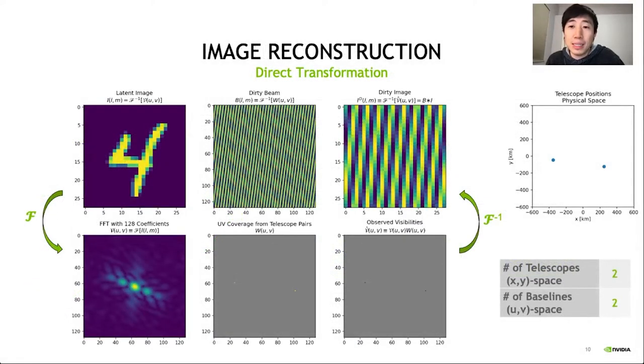As an example, say we're observing this MNIST 4 digit with an array of two telescopes. The panels in the top row are the image plane, while the bottom row shows their corresponding Fourier space, or UV plane.